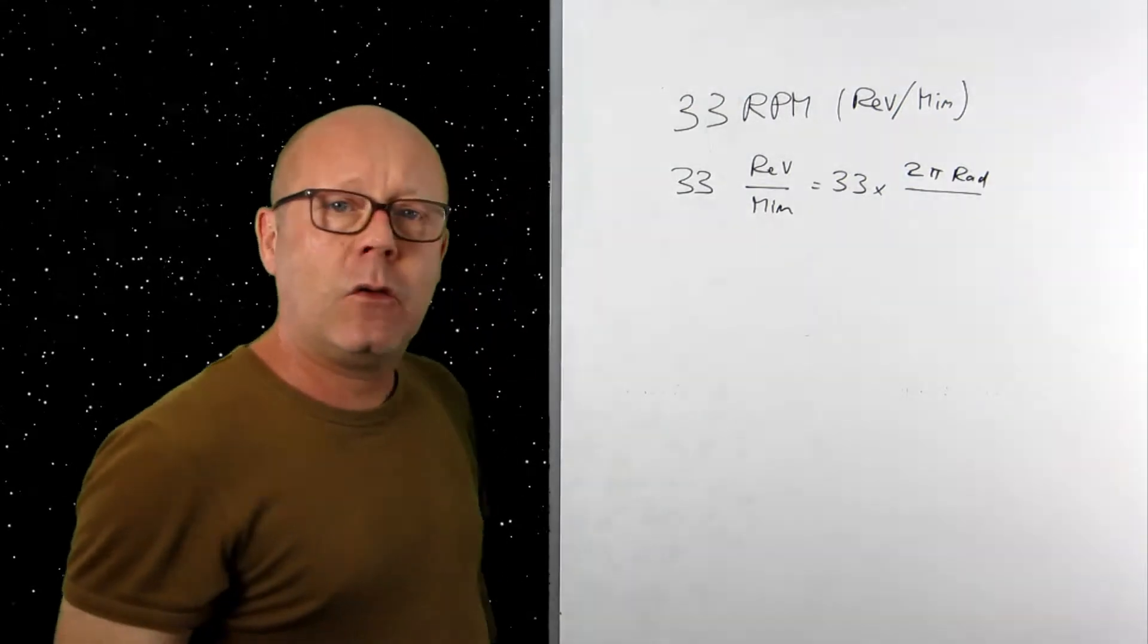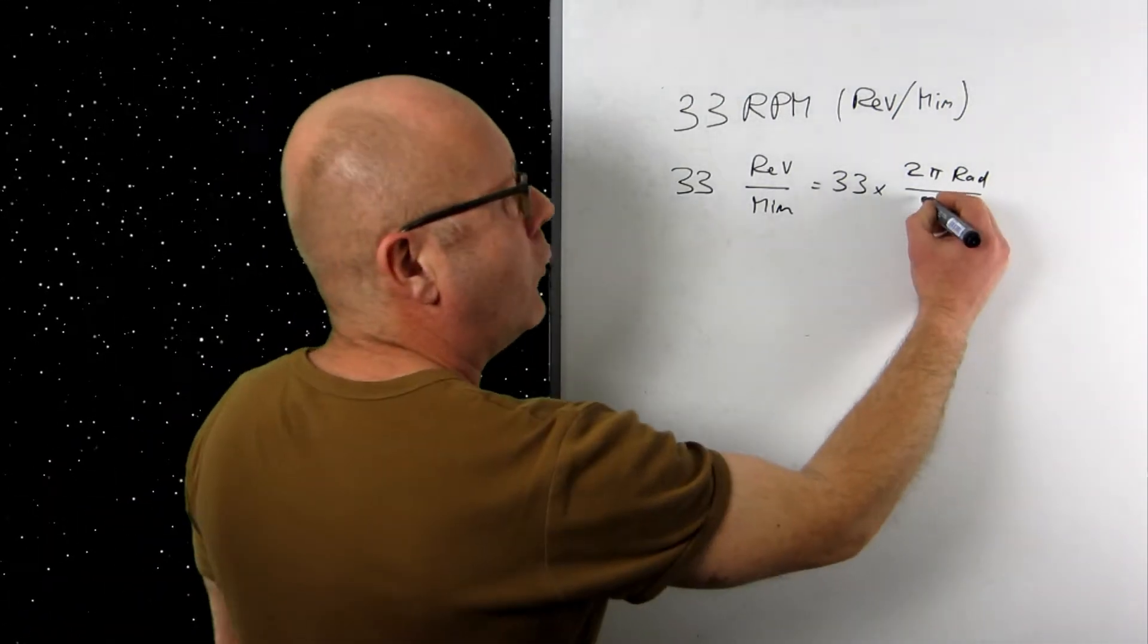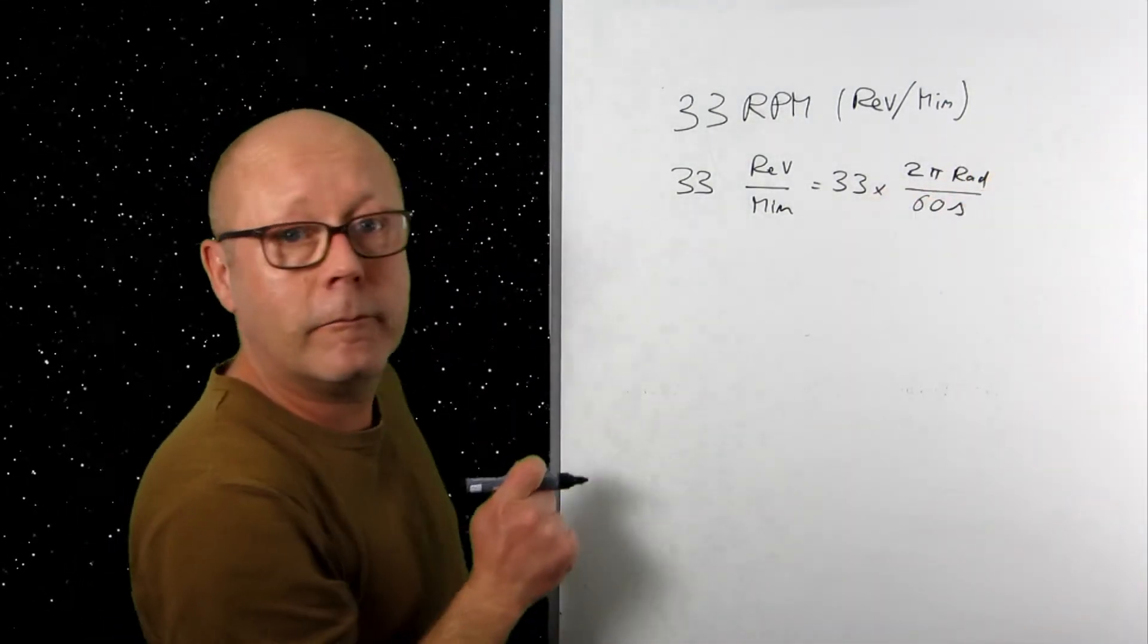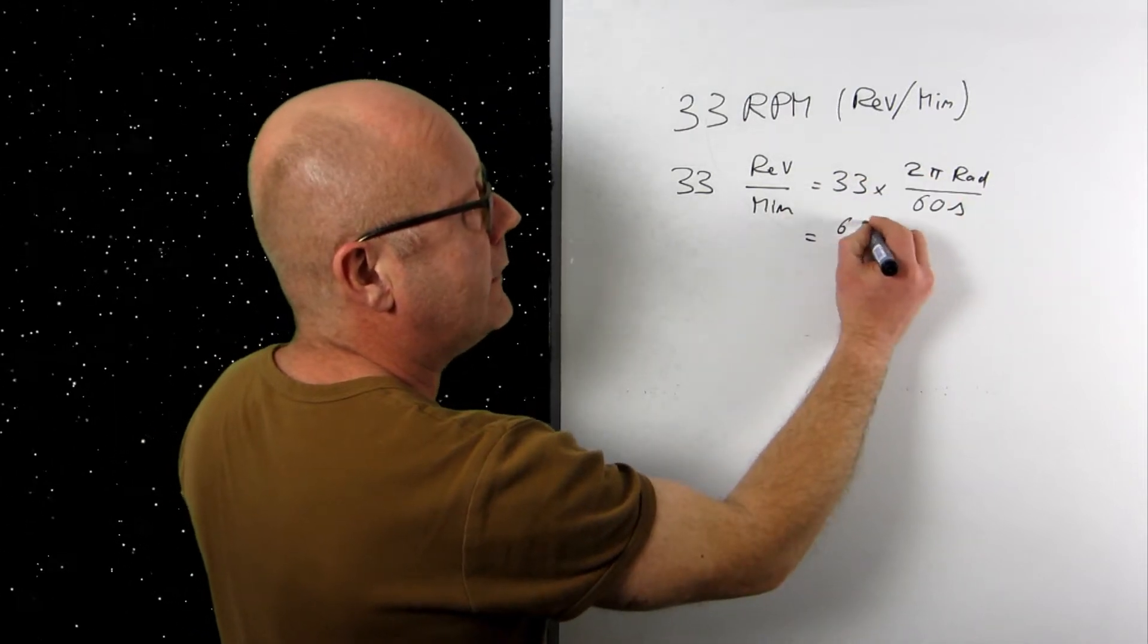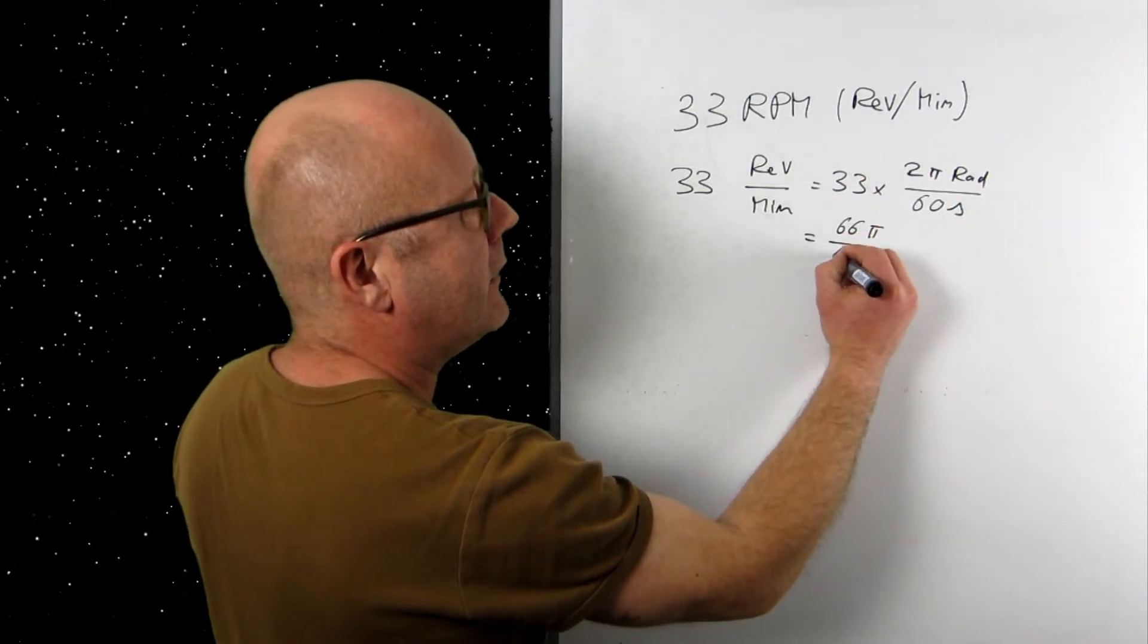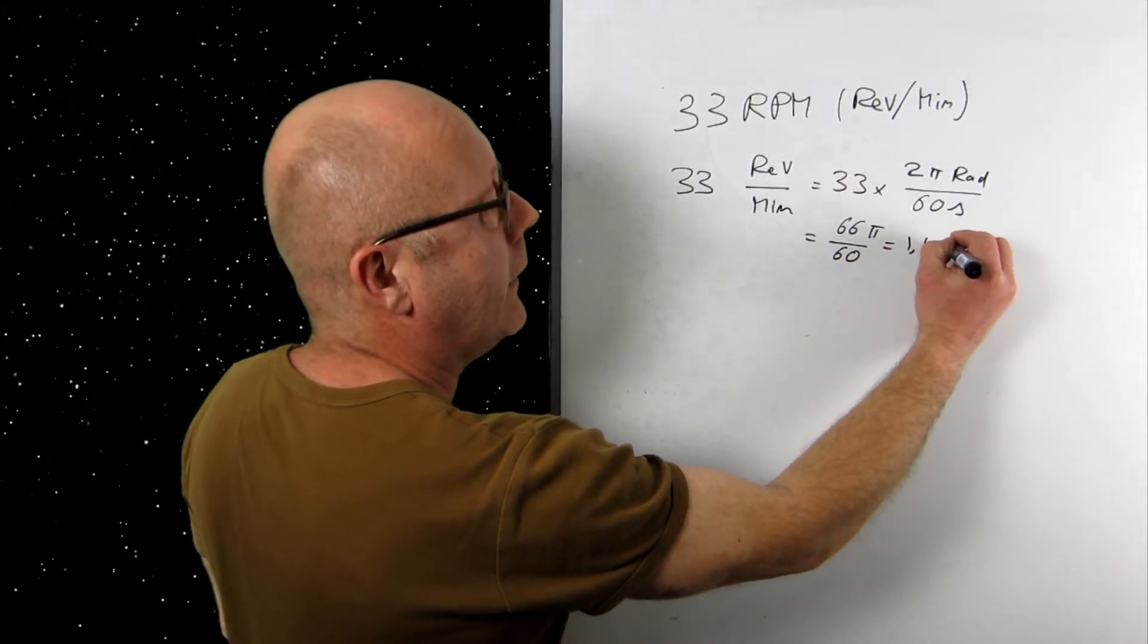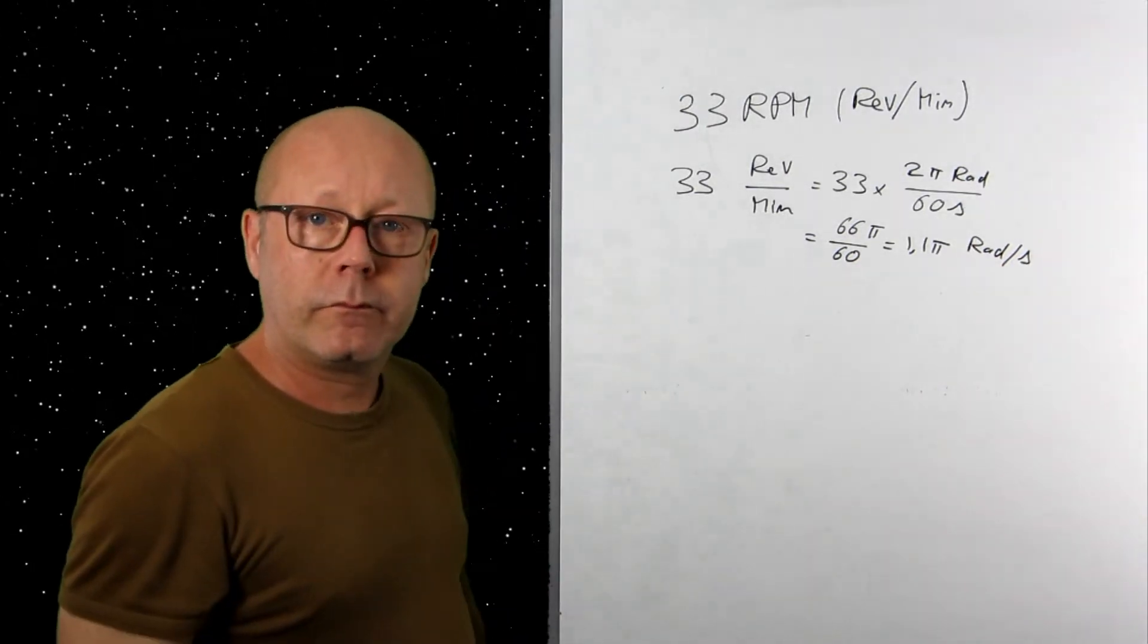33 revolutions per minute is equal to 33 multiplied by how many radians in one revolution? One revolution is one full cycle, so there's 2π radians in one revolution. How many seconds in one minute? Well, there are 60 seconds in one minute. And here you go. You've got your answer. Therefore, 33 by 2π is 66π divided by 60 equals 1.1π radians per second.